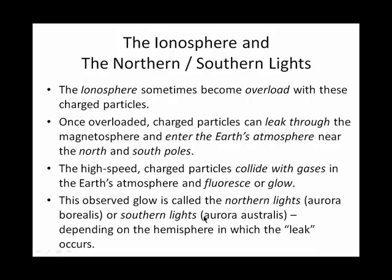Our northern lights and southern lights come from an extra abundance of charged particles from the sun and the solar wind. We can often predict when this is going to happen — if the sun has solar flares or, even more significantly, a coronal mass ejection, then we can anticipate aurora activity.